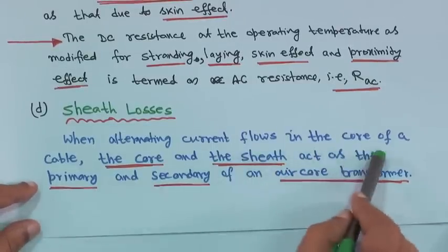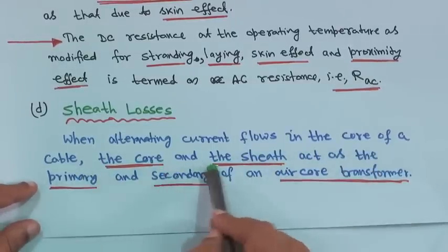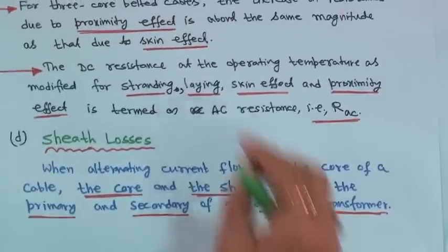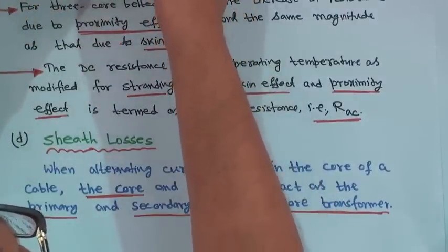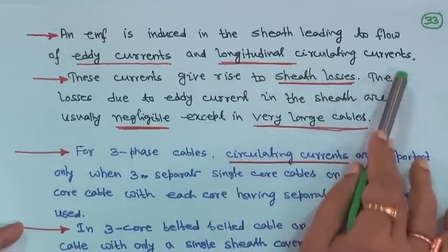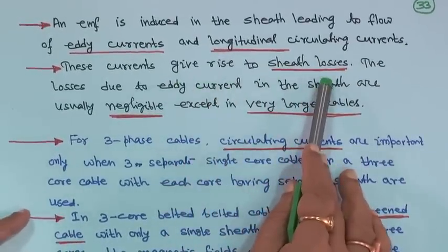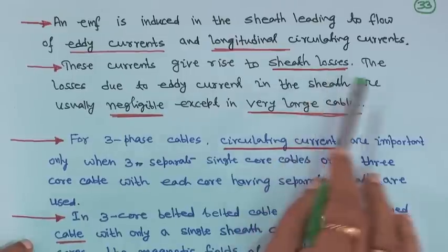When alternating current flows in the core of a cable, the core and the sheath act as the primary and secondary of an air core transformer. Therefore, an EMF is induced in the sheath, leading to flow of eddy currents and longitudinal circulating currents, and these currents give rise to sheath losses — there will be some power loss in the sheath.